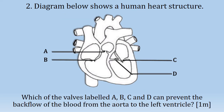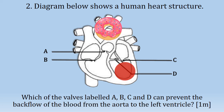Question 2: the diagram below shows a human heart structure. Which of the valves labeled A, B, C, and D can prevent the backflow of blood from the aorta to the left ventricle? One mark. This is the longitudinal section of the human heart. The aorta in this diagram has a donut shape, meanwhile the left ventricle position is at the lower chamber of the left part. The question wants us to identify the position of the semi-lunar valve, which is situated at D.